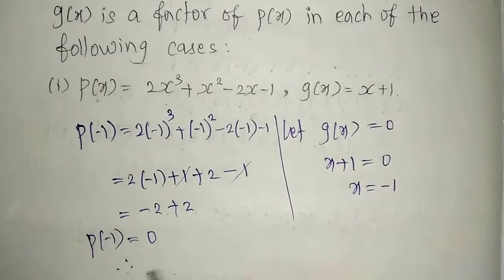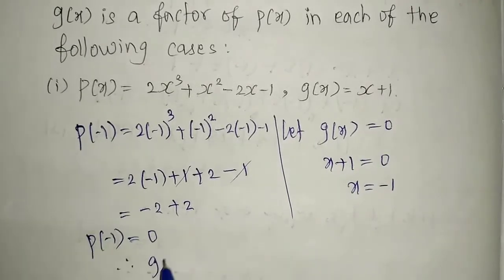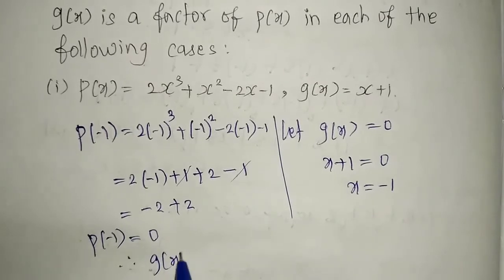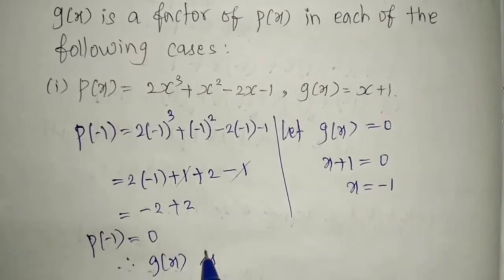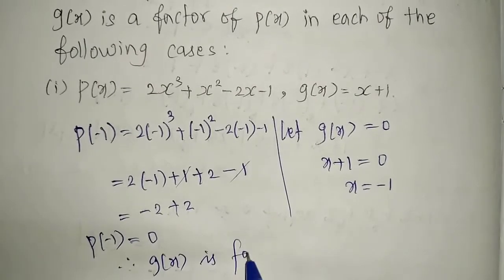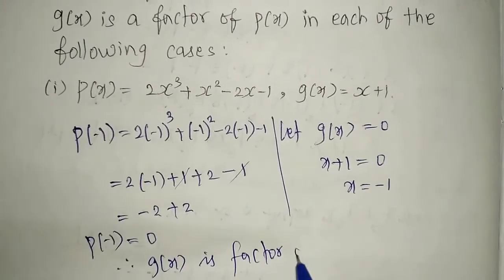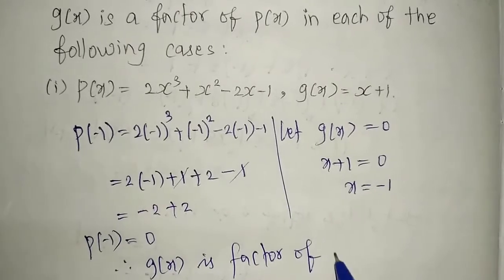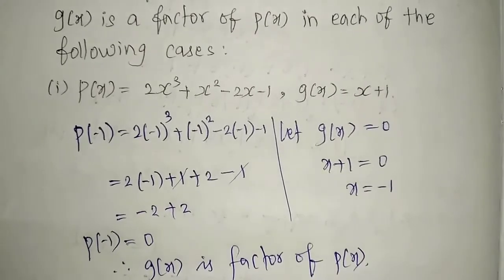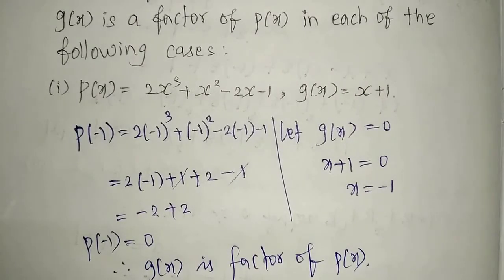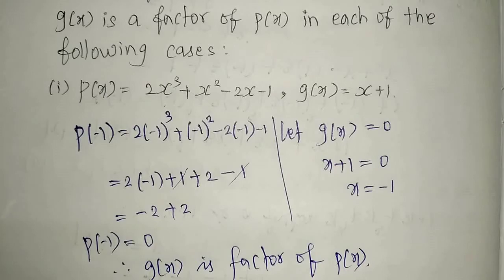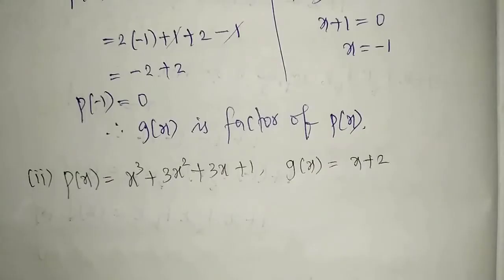Therefore, since p of minus 1 equals 0, g of x is a factor of p of x. That is the answer for the first case. Now we will go to the second question.